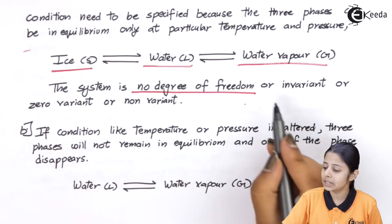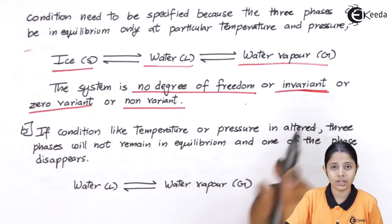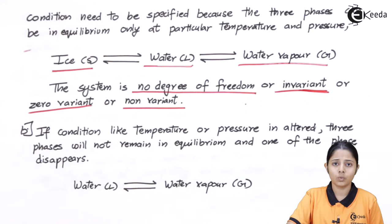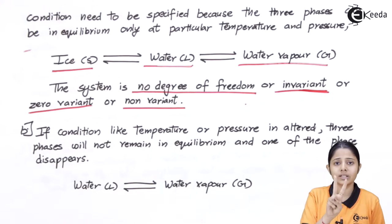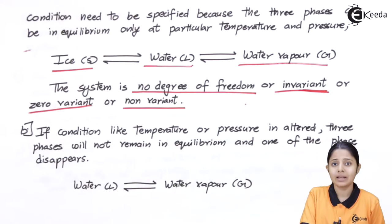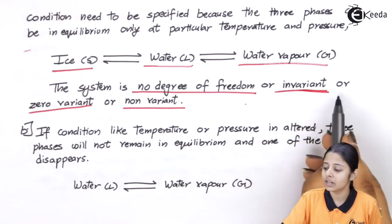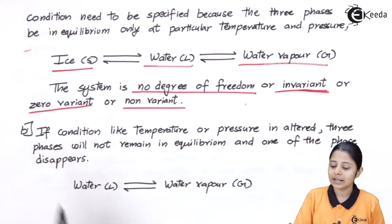What do we mean by invariant, zero variant, or non-variant? Variant means variable — something has to be variable, such as temperature, composition, or pressure. If I have just one thing which is variable, it will be univariant; if two things are variable, it will be divariant. But here we cannot vary anything — we cannot vary the temperature or the pressure, or else that point will be lost forever. That is the reason why this is known as an invariant, zero variant, or non-variant condition.